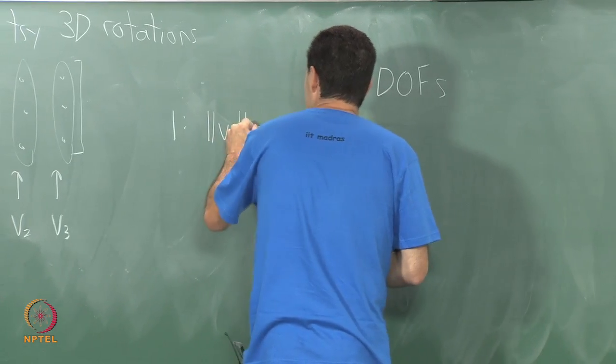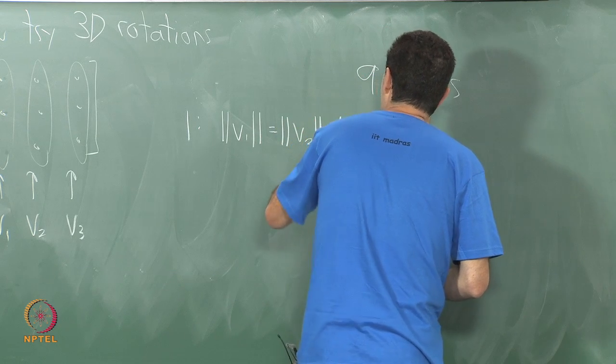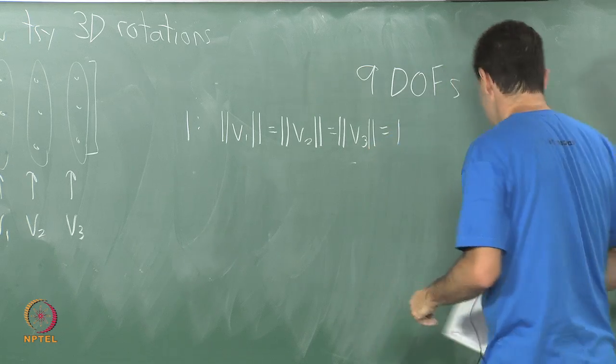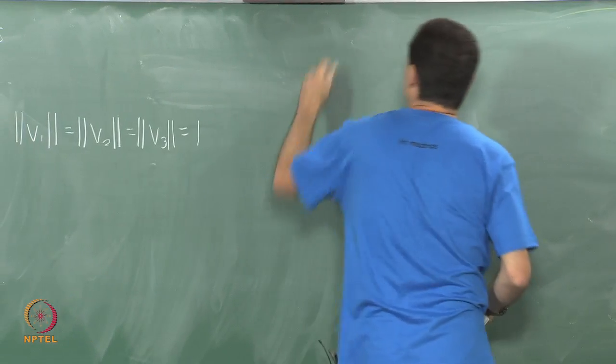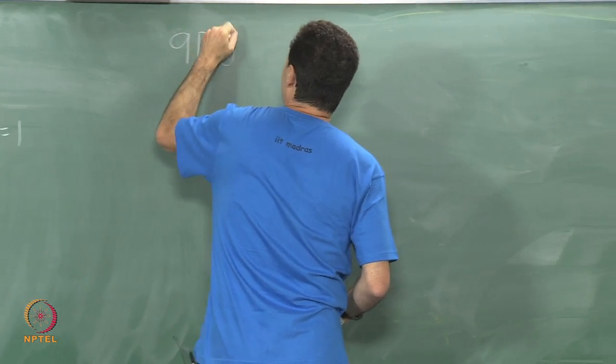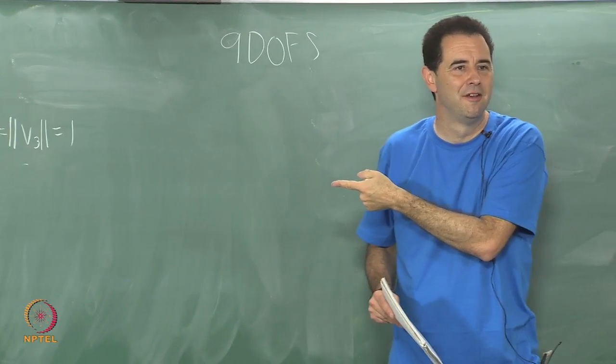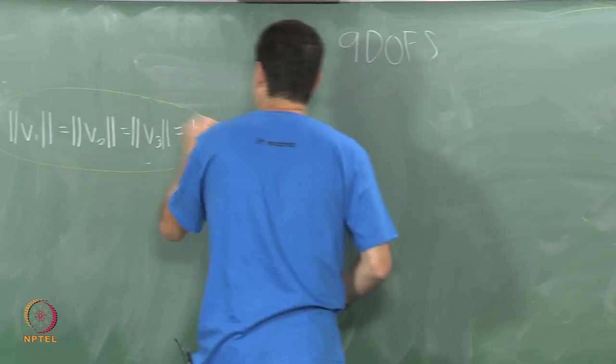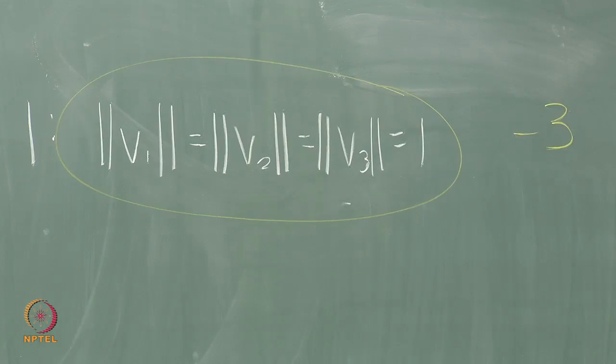The norm of V1 should be equal to the norm of V2 should be equal to the norm of V3 should be equal to 1. We start off with 9 dots. How many did I just lose? 3 right. I lost 3 there. This gives me a degree of freedom penalty of 3. I lost 3 degrees of freedom.